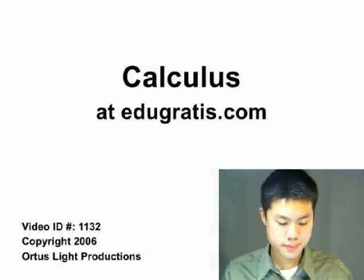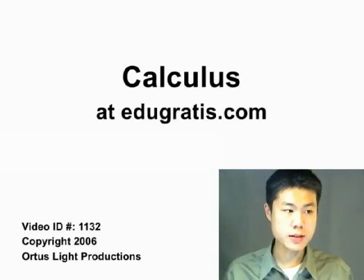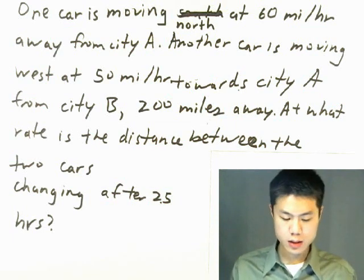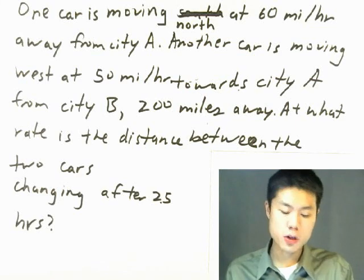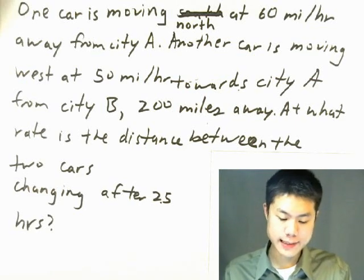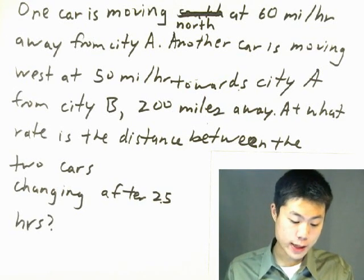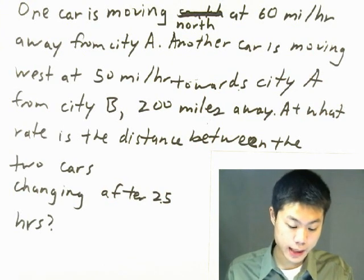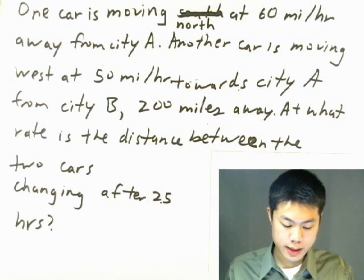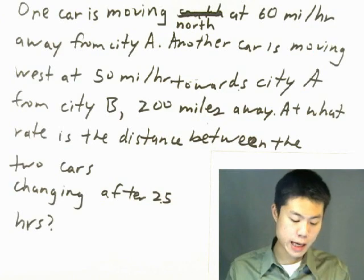Now we're going to do our last problem in the series of related rates. The question is: one car is moving north at 60 miles per hour away from city A, another car is moving west at 50 miles per hour towards city A from city B, 200 miles away. At what rate is the distance between the two cars changing after 2.5 hours?